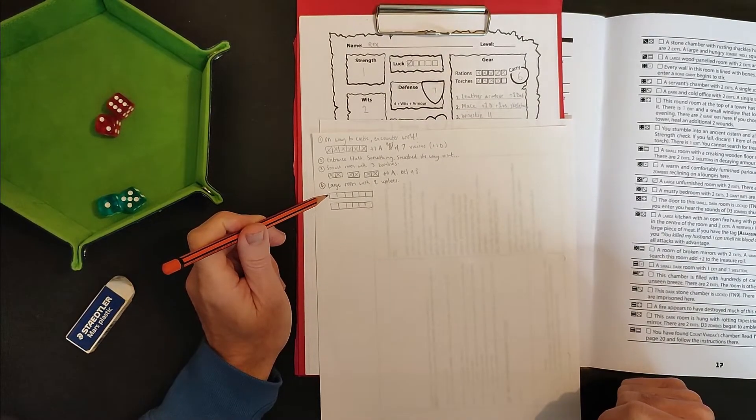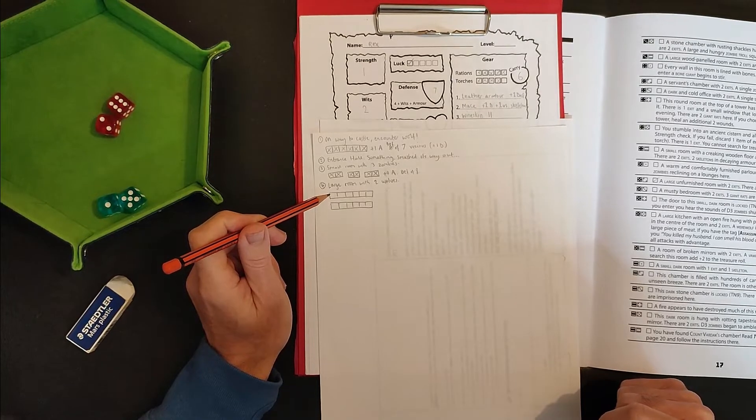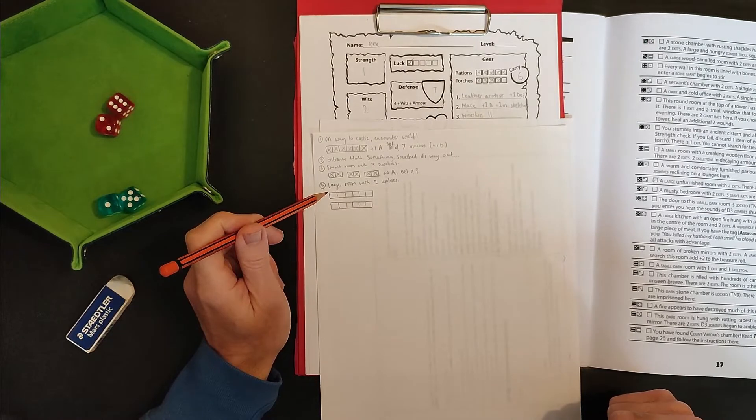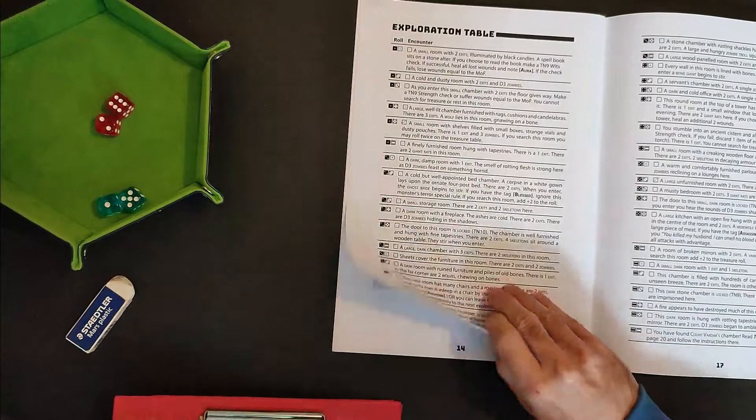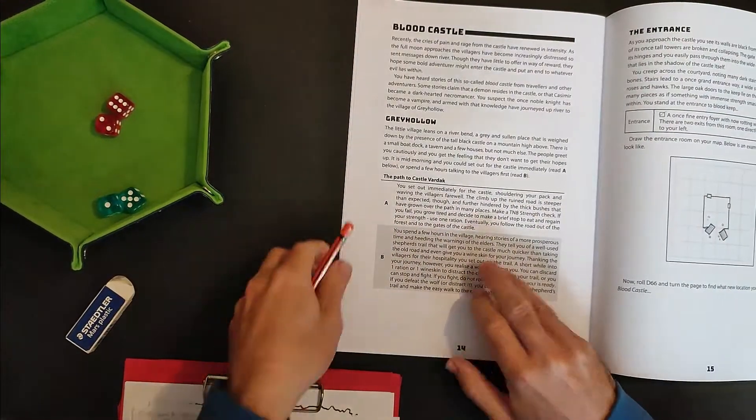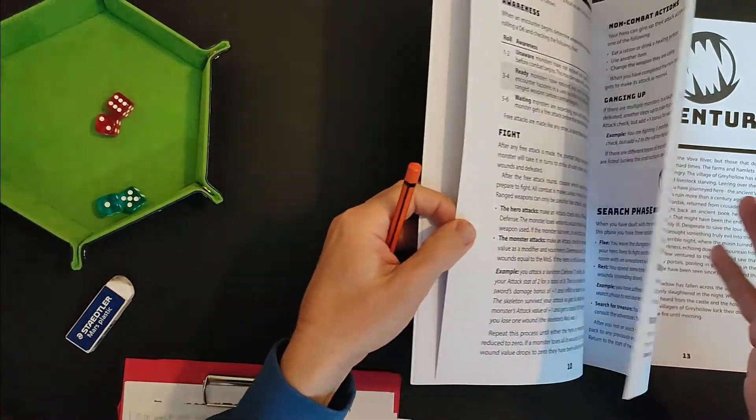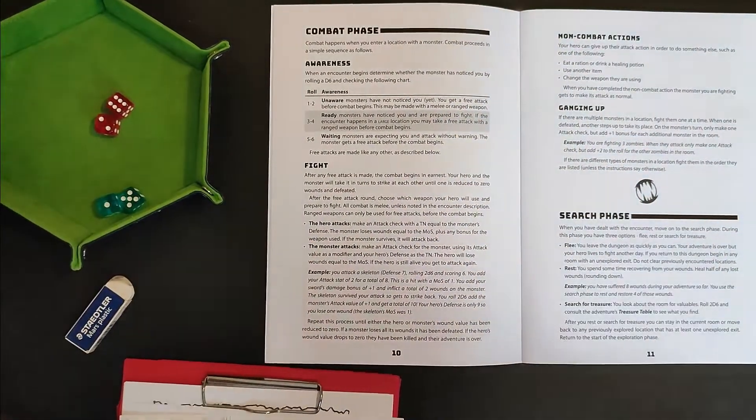So you have to snaffle down your ration instead of doing an actual attack, which always struck me as kind of insane, like pausing during a fight and eating some crisps. But there you go, there's the rules. I don't make the rules, I just follow them. Before we do the fight, we need to roll for awareness. See whether this monster has noticed us.